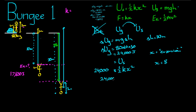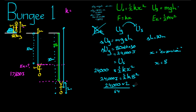Now we have 24,000 joules of energy contained in a spring extended 8 metres. To get K by itself, we say 24,000 equals half K times 8 squared. Multiply both sides by 2 to remove the half, then divide by 8 squared — that's 64. And we find K is equal to 750 newtons per metre, newtons per metre being the units for K.